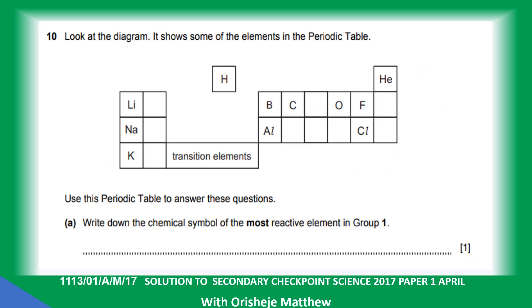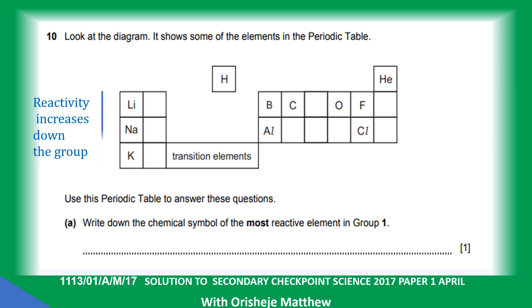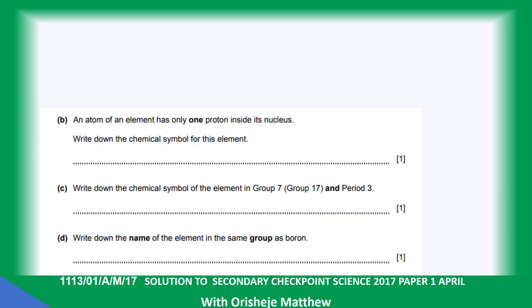Question ten: use the periodic table to answer the questions. Write down the chemical symbol of the most reactive element in group 1. Group 1 contains lithium, sodium, and potassium. Reactivity increases down the group, so potassium is the most reactive element in group 1. An atom of an element has only one proton inside its nucleus — that element is hydrogen.